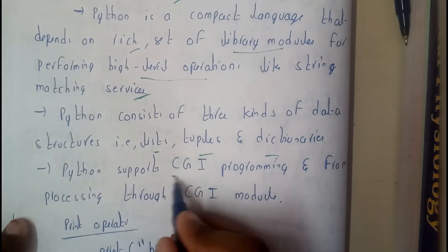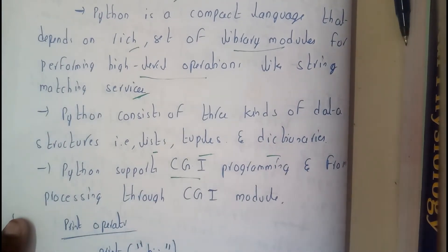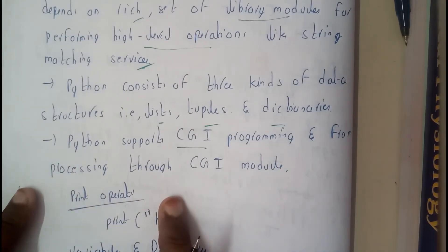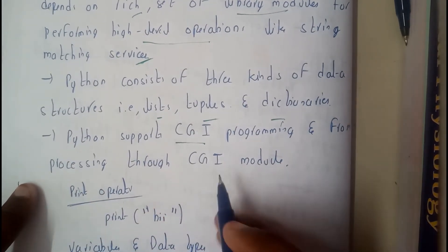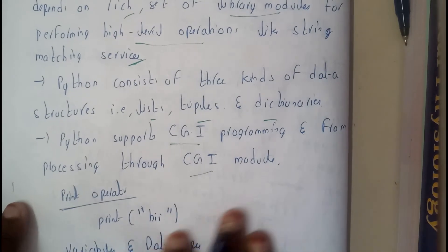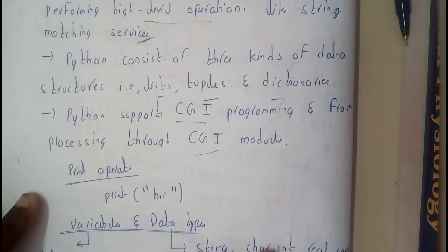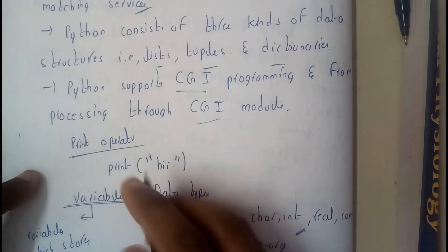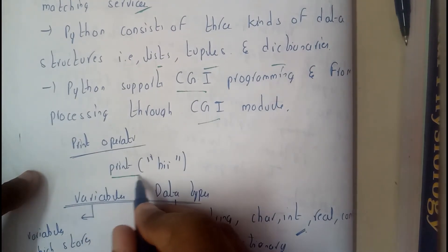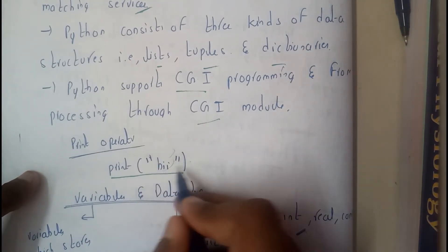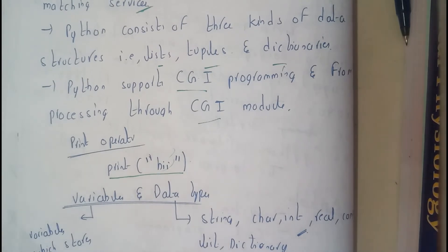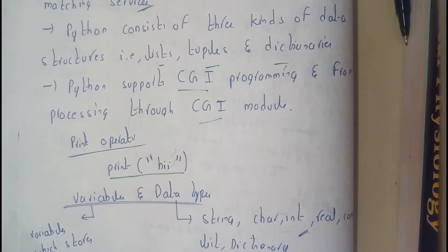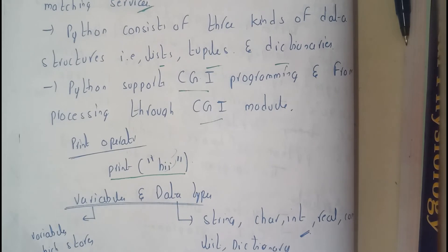Python supports CGI, which we discussed in the applications section, and performs form processing through CGI modules itself. Here are some small syntax examples for clarity. To print a statement, you write: print(message). A semicolon is not compulsory in Python — you can place it and there will be no error.